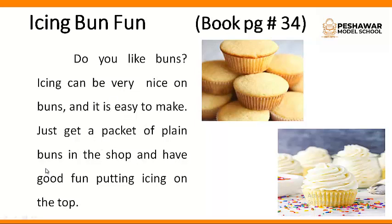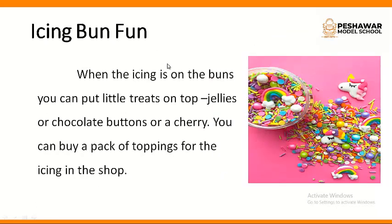Just get a packet of plain buns from the shop and have good fun putting icing on the top. You can get a simple pack of cake and then do the icing yourself. It is very easy. When the icing is on the buns, you can put little treats on top. Treats are the jellies, chocolate buttons — buttons are like sweets. These are the sprinkles, these are the different treats which we can put on top of the cake to make it look beautiful.